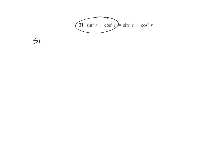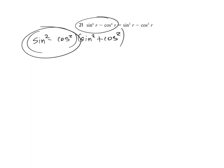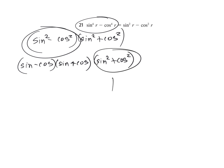Difference of squares: sine squared minus cosine squared times sine squared plus cosine squared. Sine squared minus cosine squared factors as sine minus cosine times sine plus cosine. Multiplied by sine squared plus cosine squared. Since sine squared plus cosine squared is 1, 1 times this is just sine minus cosine times sine plus cosine, which equals sine squared minus cosine squared — one step too many; the answer is above it.